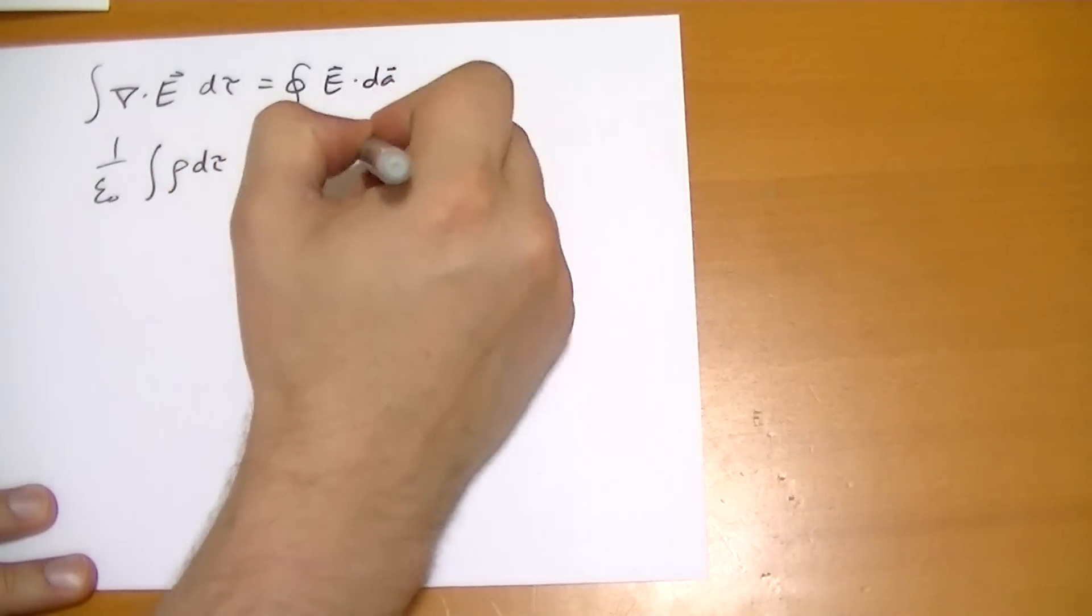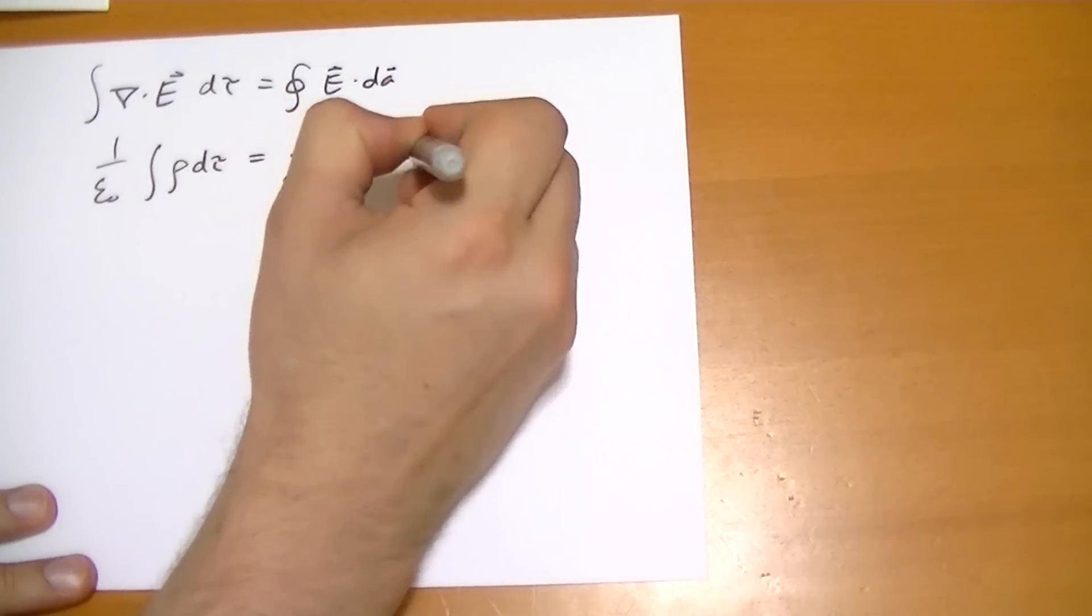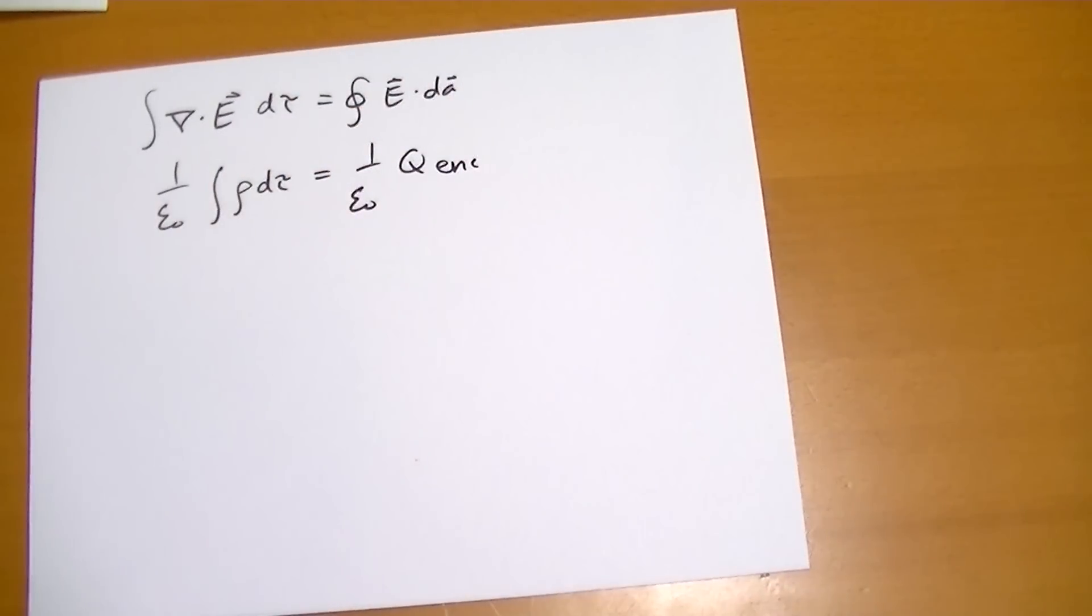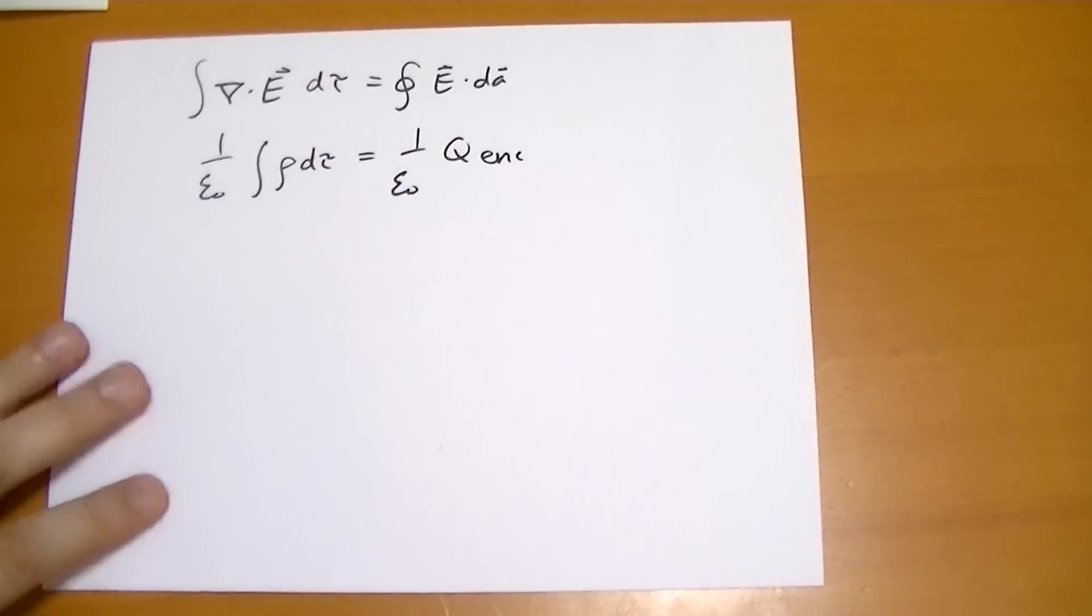1 over epsilon-naught, the total charge of whatever surface we're using to enclose it. So here we have derived the integral form of Gauss's equation rather easily.